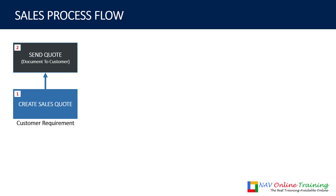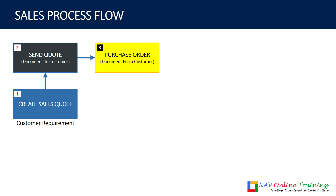Once the customer receives the document, they accept the sales quotation you have sent — of course, after some negotiation that may happen. So once they confirm, they send you a purchase order. This is not the purchase order for your company; it is the purchase order from the customer side. It is called a purchase order because the customer is purchasing from you. So from their side it is a purchase order, but it becomes a sales order for you.